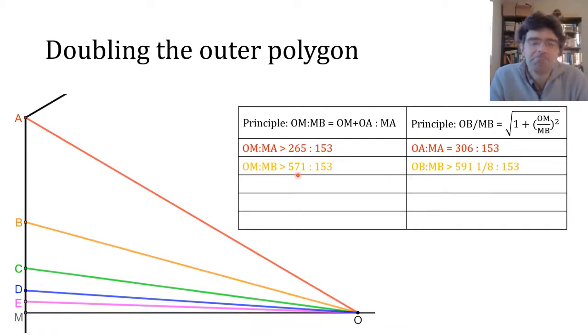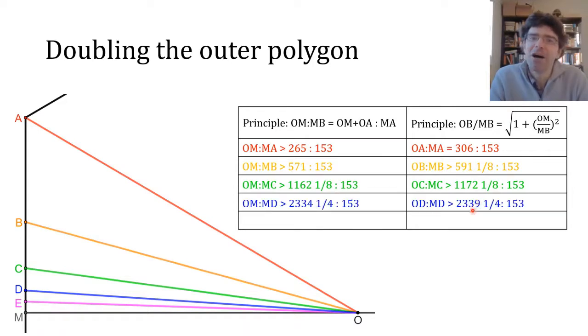To extract OB to MB, it's just extracting the square root just below 153 squared plus 571 squared. It's a boring operation without a calculator in Archimedes' day but it was a pretty routine one. Archimedes came up with it being just over 591 and an eighth to 153. And if we repeat this process again and again we get OM to MC just over 1162 and an eighth to 153, OC to MC, OM to MD, OD to MD, OM to ME just over 4673 and a half to 153. And at this point we can stop.